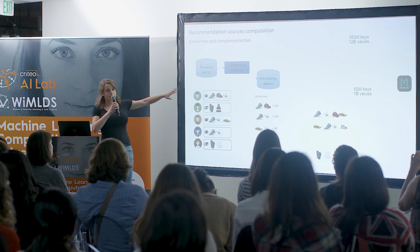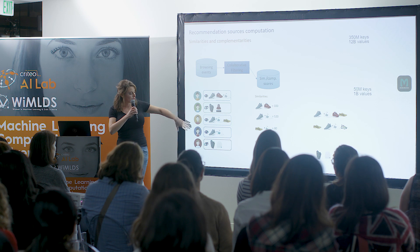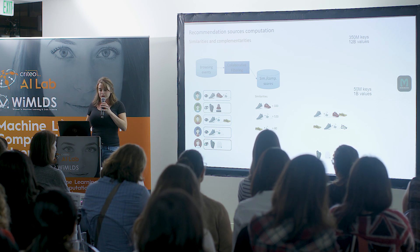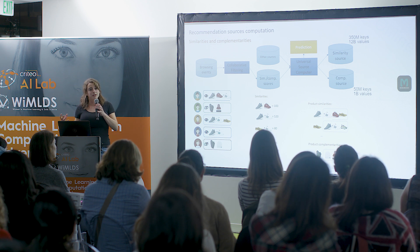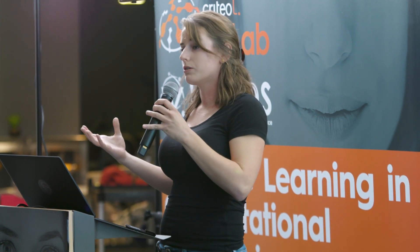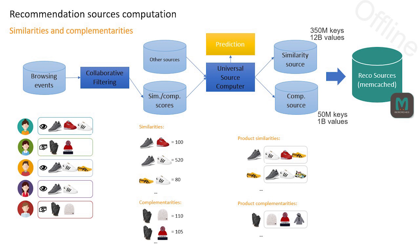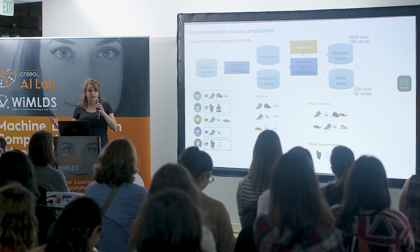Imagine you have users that have seen several items — one person has seen shoes, another has bought gloves and hats, etc. Through collaborative filtering, we'll compute similarities — products that have been seen together — and complementarities — products that have been bought together. We could also plug in other sources of similarity and complementarity that are not collaborative filtering, and use a prediction model offline that takes the best from all sources.